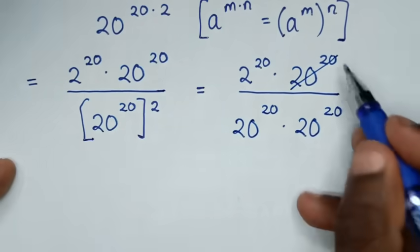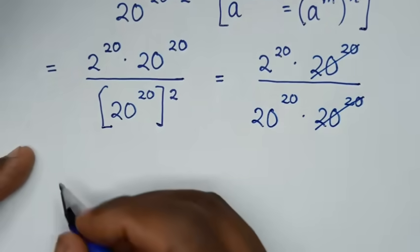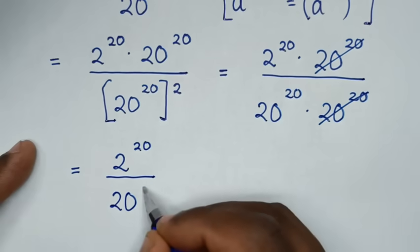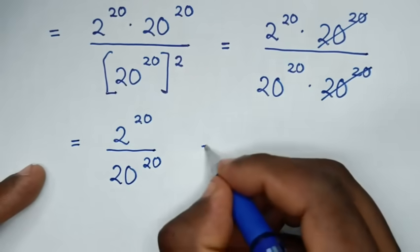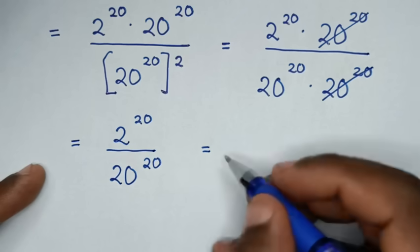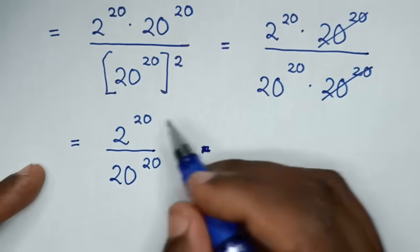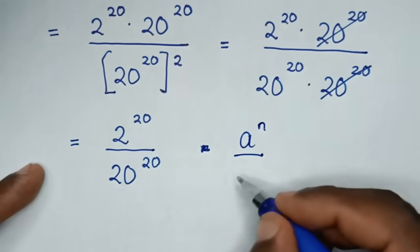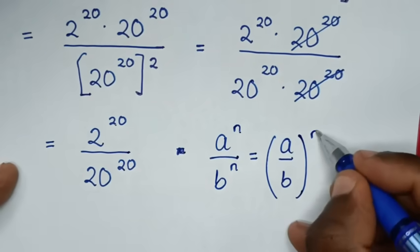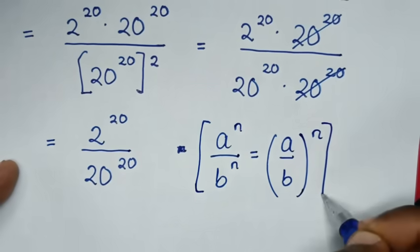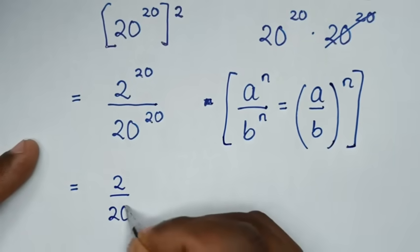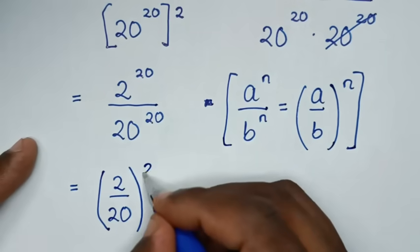Then, to simplify, this 20 power of 20 — we cancel this 20 power of 20 — so it will be equal to 2 power of 20 over 20 power of 20. Then, in the next step, it will be equal to: since power of 20 is common, we will apply the rule which is a power of n over b power of n, which is equal to a over b bracket power of n. So, it will be 2 over 20, then bracket power of 20, which is common.